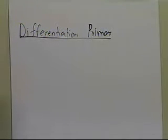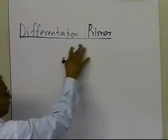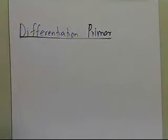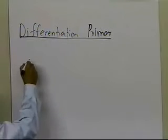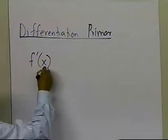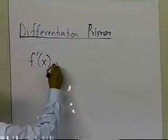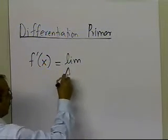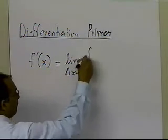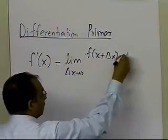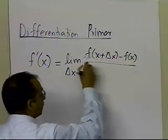Going back to your differentiation — in order to understand numerical differentiation, we do need to talk about what you learned in the differential calculus class. You already know that if you are trying to find out what the derivative of a function f is, that is defined as the limit as delta x approaches zero of f of x plus delta x, minus f of x, divided by delta x.